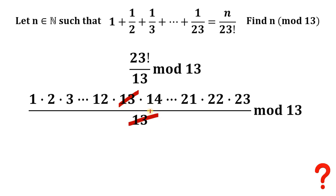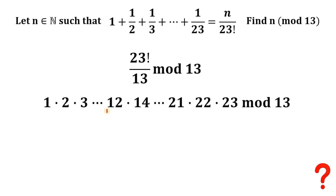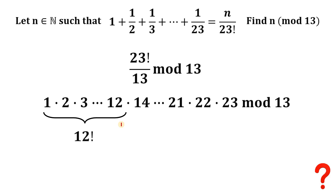So if we divide this by 13 we don't get 0. We now have 1 × 2 × 3 × 4 all the way to × 12 × 14 all the way to × 21 × 22 × 23, mod 13. Let's focus on this: 1 × 2 × 3 up to 12 is simply 12 factorial.